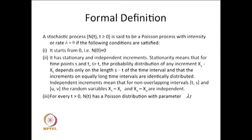Now we can relate this to the derivation we have done. We took care of three assumptions: starting at time 0, increments are stationary, and increments are independent — that is, non-overlapping intervals are independent. From these assumptions, the derived distribution of N(t) is a Poisson distributed random variable. Therefore, this is a Poisson process.